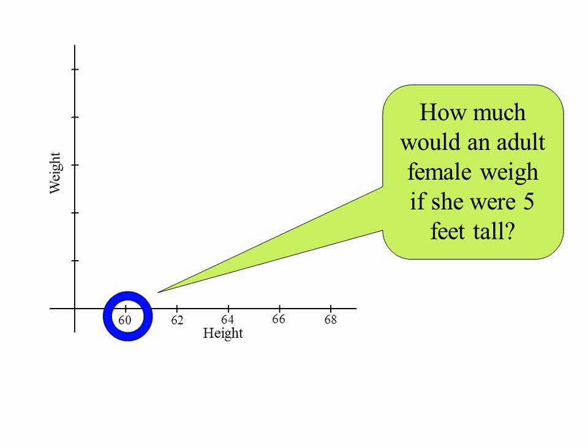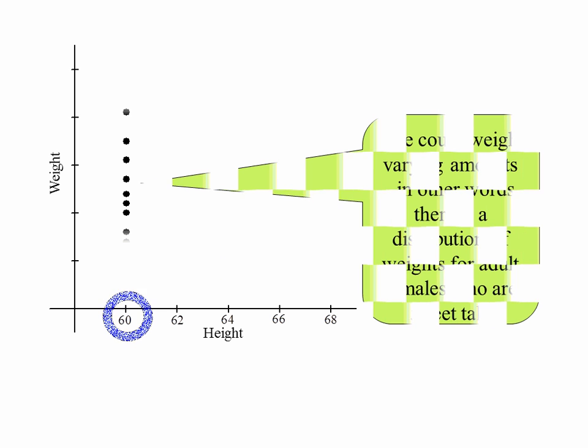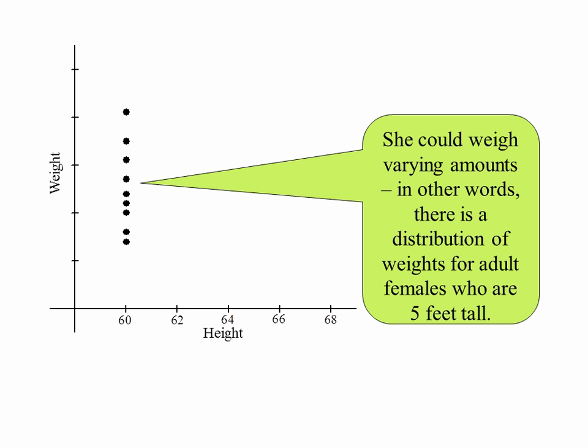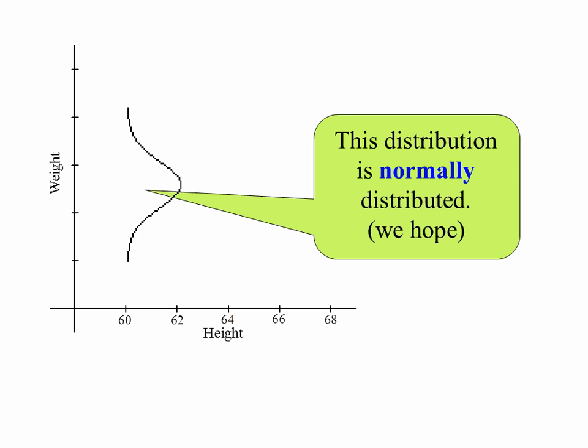Here's what I mean. Let's take a look at just females who are 5 feet tall. If you had a broad range of all females who are 5 feet tall, hopefully you get the idea that this will vary. In other words, there's a distribution of weights for all adult females who are 5 feet tall. If you have a distribution, what we're saying in this unit — and this is the beauty of this unit — is that the distribution is normally distributed, or at least we hope that it will be.